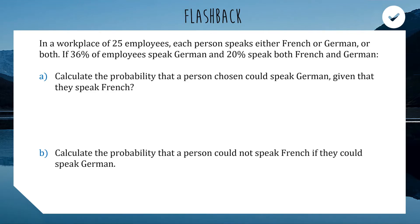We're starting off with a flashback question about probability. In a workplace of 25 employees, each person speaks either French or German or some speak both. 36% of the people speak German and 20% speak both French and German. First question: Calculate the probability that a person chosen could speak German given that they speak French. Now, this is a pretty tough question that can be turned into a very easy question if you draw the correct diagram. If your Venn diagram sensor is going crazy right now, I'm right there with you. Let's get one sketched up.